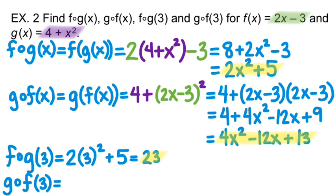Now I'm going to do G of F of 3. So I'm going to plug a 3 into the G of F function. So that's going to be 4 times 3 squared minus 12 times 3 plus 13. And that equals 13.